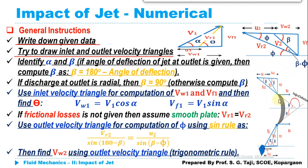You should carefully draw the inlet and outlet velocity triangles based on the given data — the angle of inclination alpha, and the angle of deflection. On the basis of angle of deflection and its location, you can compute beta or phi. If the angle of deflection at the outlet is given, you can compute beta as 180° minus the angle of deflection.